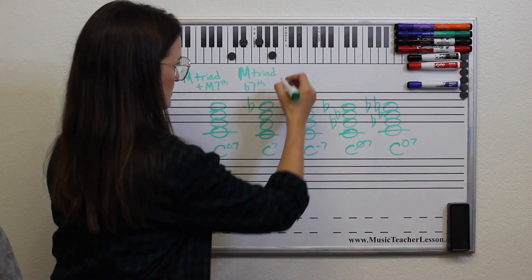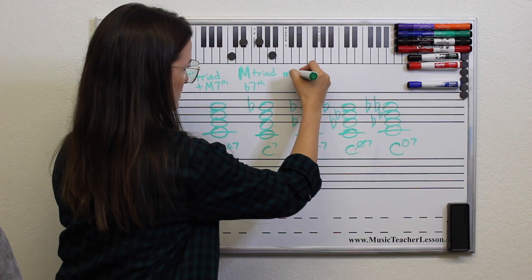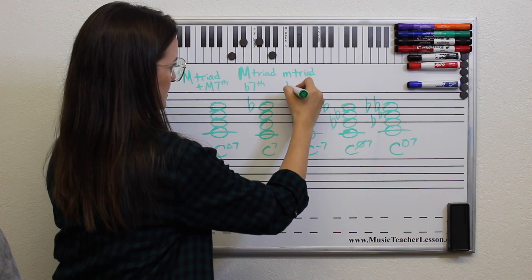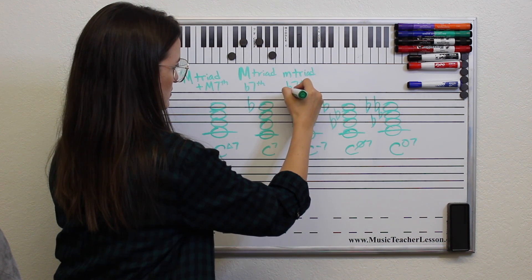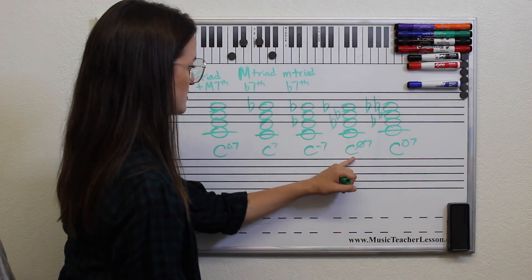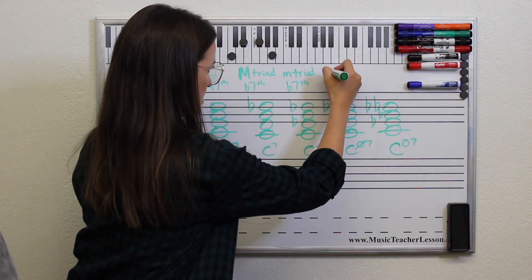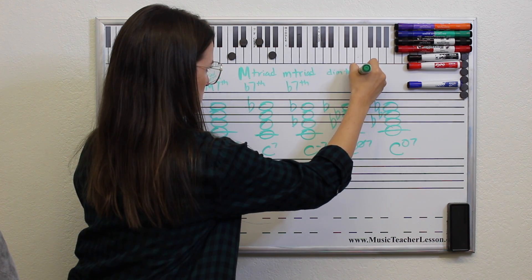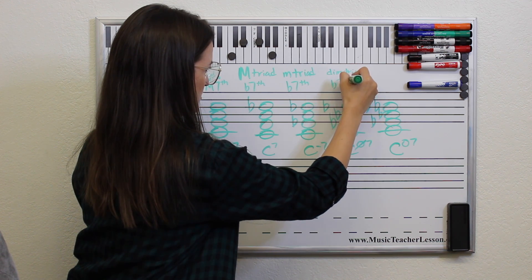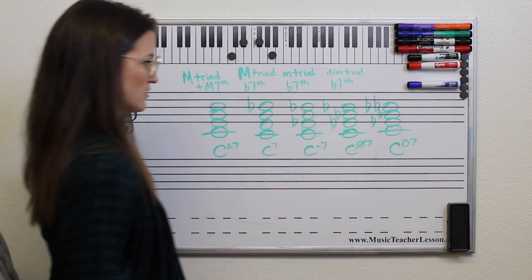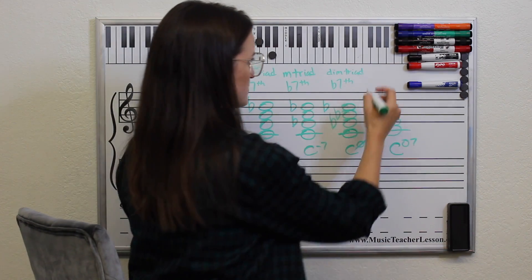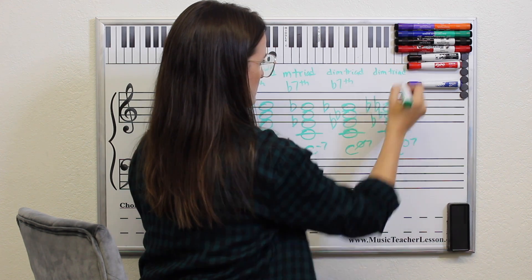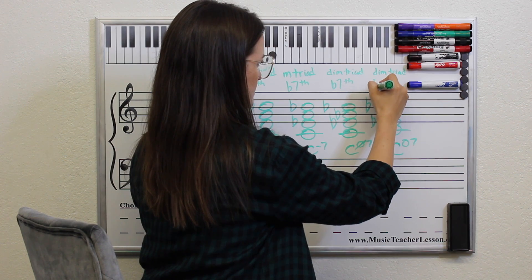C7 has a major triad and a flat 7th. C minor 7th has a minor triad and a flatted 7th. C half diminished has a diminished triad and a flatted 7th. A fully diminished 7th chord has a diminished triad and a double flat 7th.